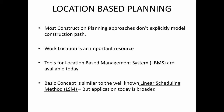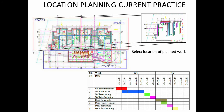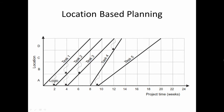What location based planning does is actually try to bring the space resource explicitly into your plan or schedule. This is not very easy unless you have appropriate tools. Today, tools are becoming available to do LBMS very systematically. You might have heard of the technique called LSM or linear scheduling method, which was primarily used for linear projects such as roads, pipelines, or railway lines. LBMS is based on linear scheduling method techniques. A location based plan has location on the y-axis and duration or time on the x-axis, with each task going through a particular location at a particular time.